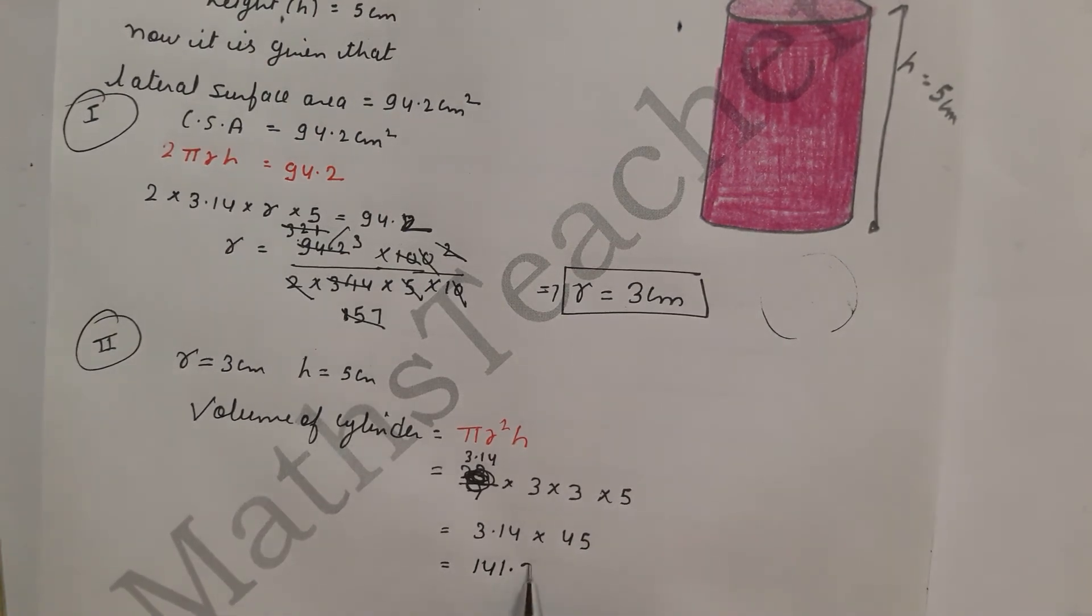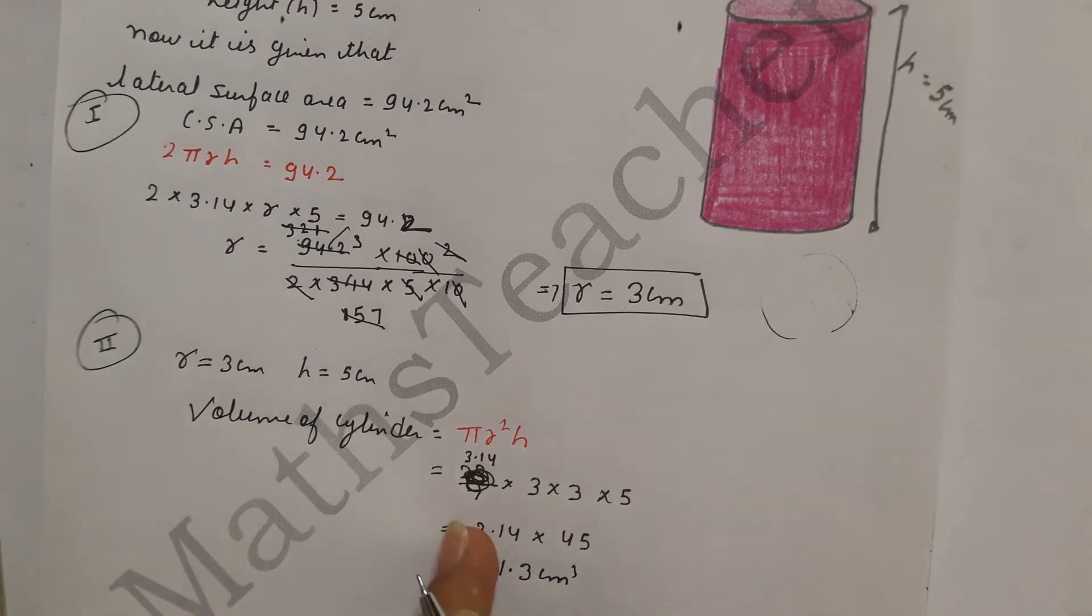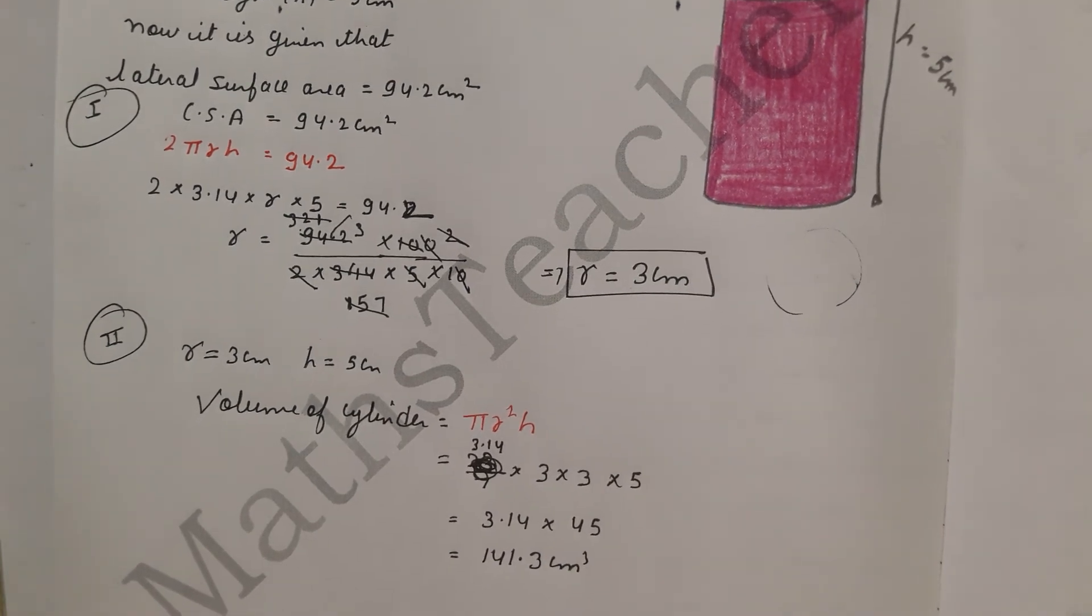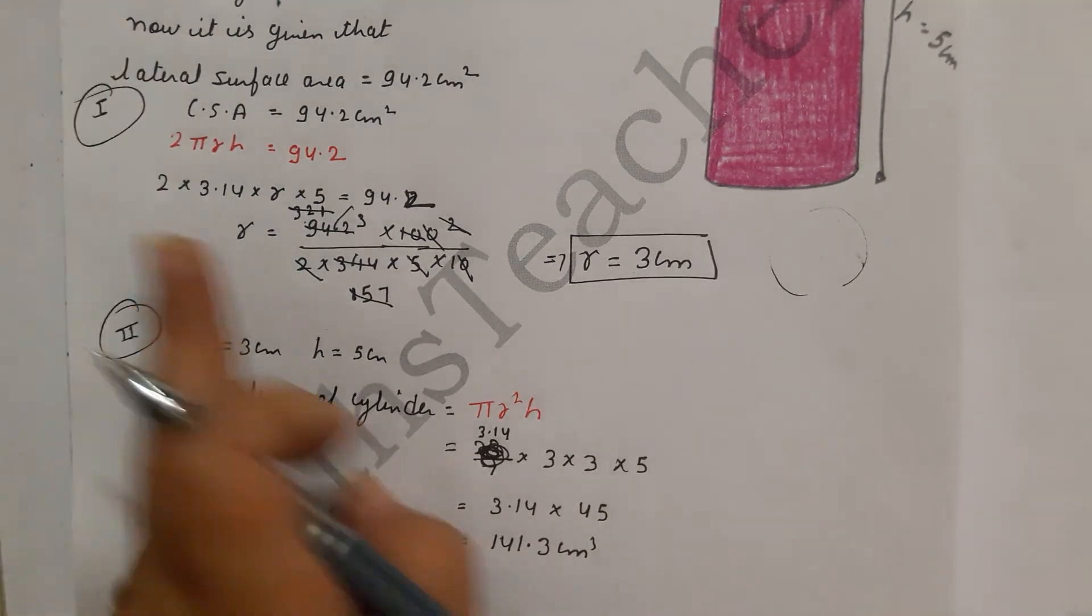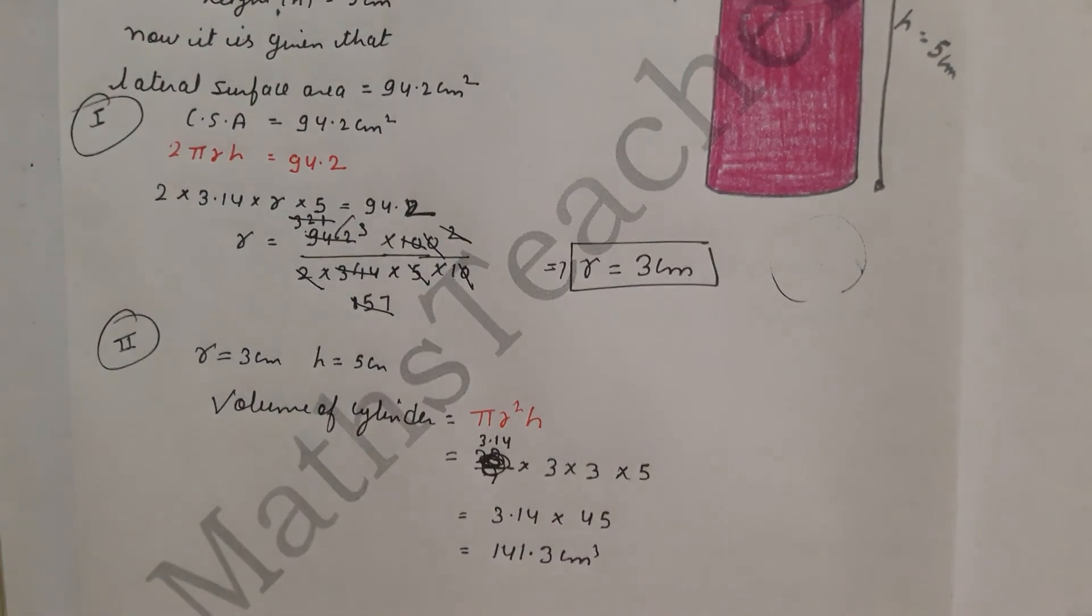So 141.3 cm cube. So multiply easily on the side, so I don't need to tell you this. Volume of cylinder here is 141.3 cm cube and the radius here will be 3 cm. Very simple question, direct question. Easily you will solve it if the formula is learned well.